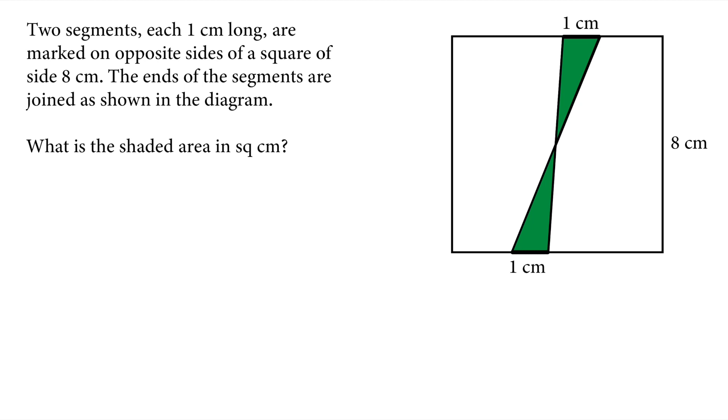Hello everyone. Welcome back to another Math Olympiad question. Let's read this question. Two segments each one centimeter long are marked on opposite sides of a square of side eight centimeters. The ends of the segments are joined as shown in the diagram. What is the shaded area in square centimeters?